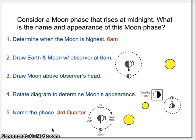We drew our earth and our sun and put an observer at the 6 a.m. on earth position. Then we drew the moon directly above that observer's head.